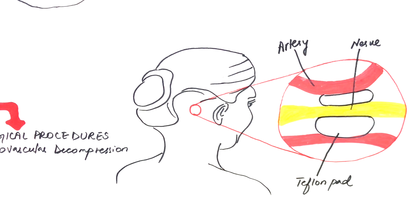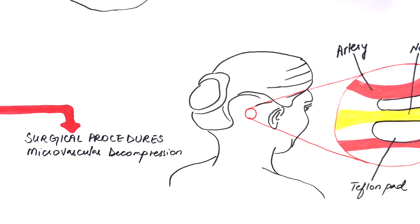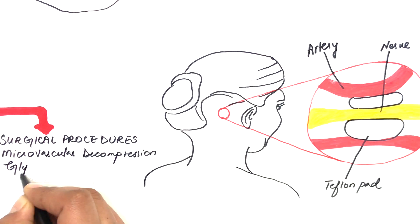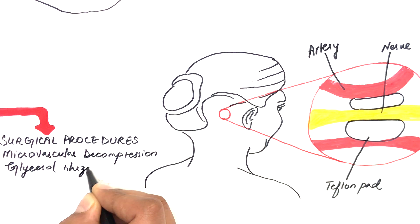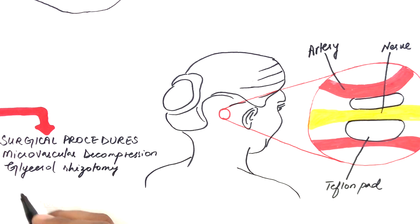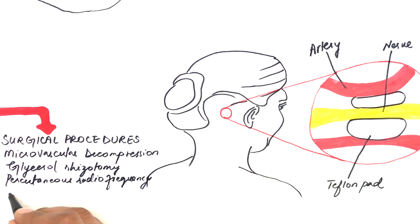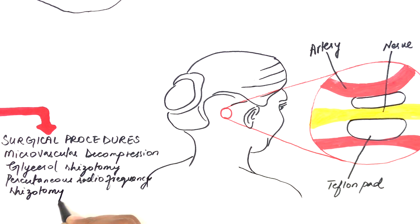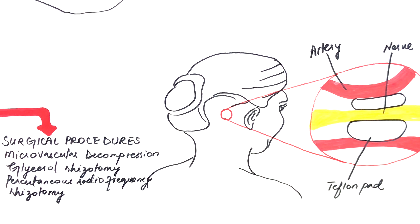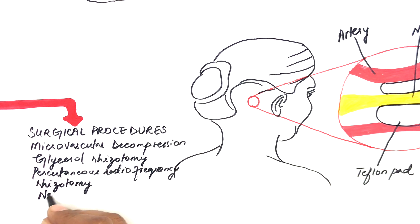Some less invasive surgical techniques are also applied which aim at destroying affected portions of the trigeminal nerve. These procedures include glycerol rhizotomy, which is the injection of alcohol near nerves leaving or entering the trigeminal ganglion; percutaneous radiofrequency rhizotomy, which is the selective destruction of the sensory fibers of the nerve by crushing or by the application of heat; and neurectomy, where the sensory roots are severed or blocked to relieve pain.